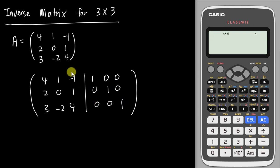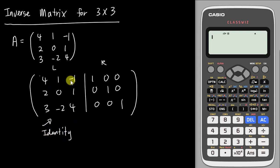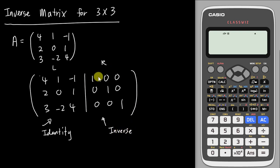My objective is to change my left-hand side matrix into the identity matrix — changing this 3x3 into 1, 0, 0, 0, 1, 0, 0, 0, 1. After performing row operations, whatever answer appears on my right-hand side will be the inverse matrix for A. So if you get the idea, we will start to do row operations.